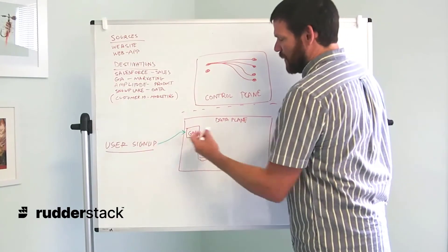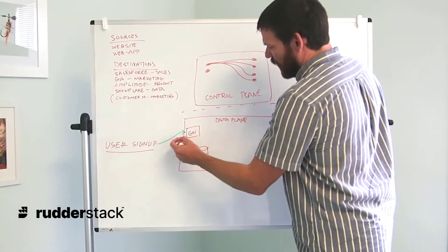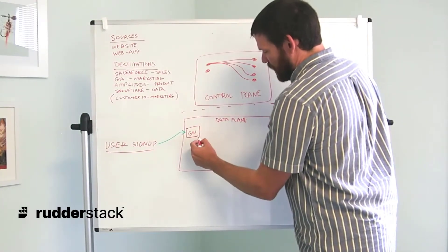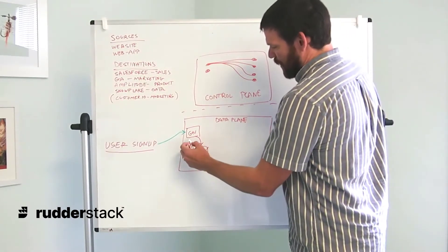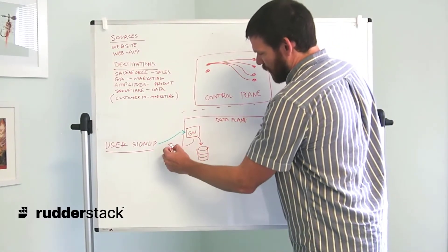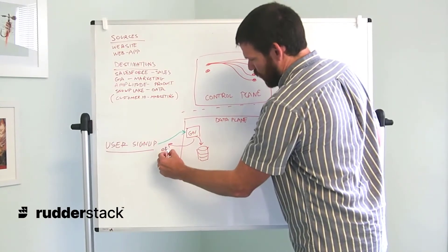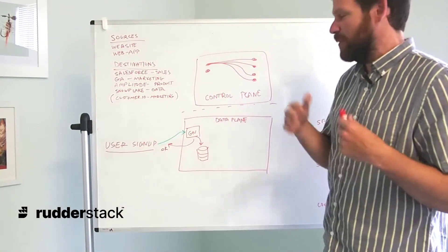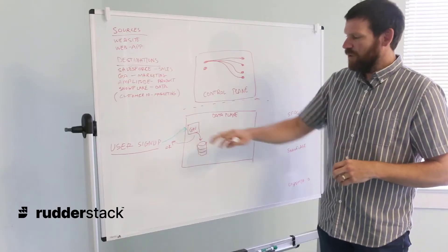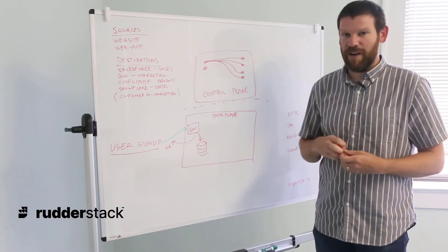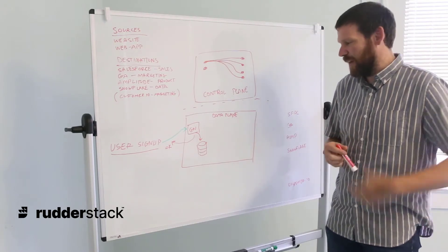When events come in to RudderStack, they come into the gateway, and then the gateway stores them in a Postgres table. Once that's happened, it will return to the client a 200 response, which says that the event was received successfully and is now being processed. This process is designed to be very quick and very reliable from a client's point of view.